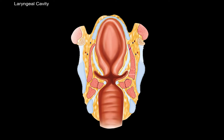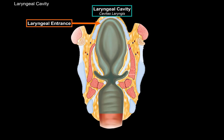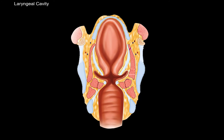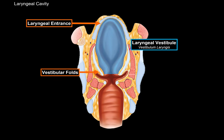The last thing I want to talk about in this video is the laryngeal cavity, or cavitas laryngis, which is the whole cavity here. It starts at the laryngeal inlet, or the entrance, and ends at the lower border of the cricoid cartilage. We generally divide it into three landmarks. The first one is the laryngeal vestibule, going from the laryngeal entrance to the vestibular folds. Then there's the glottis, between the vestibular folds and the vocal cords, or the vocal folds — it's a synonym.